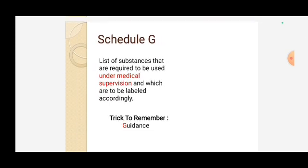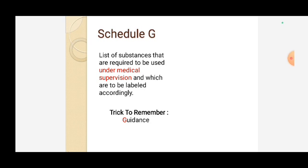Schedule G covers substances required to be used under medical supervision and which are to be labeled accordingly. The trick is 'G for Guide.' Remember the key phrase: 'under medical supervision' — this is very important and MCQs have come from this. Schedule G: list of substances required to be used under medical supervision.